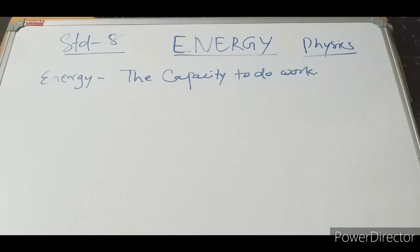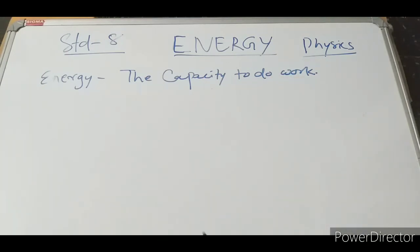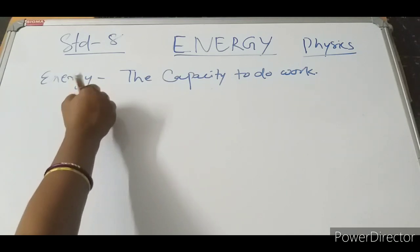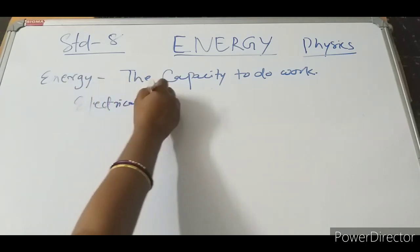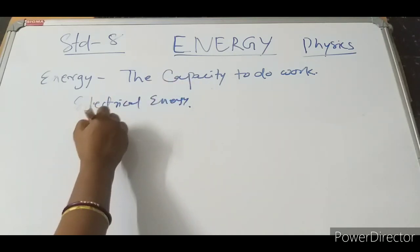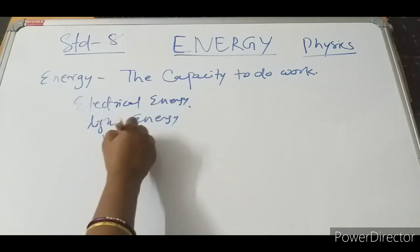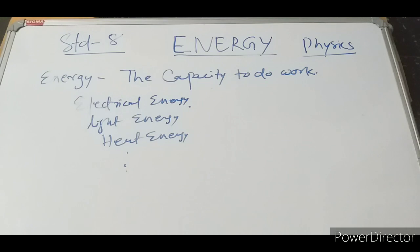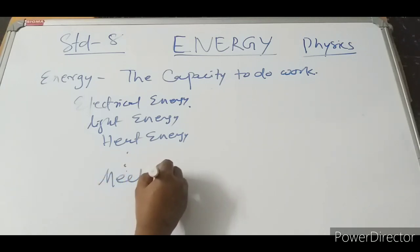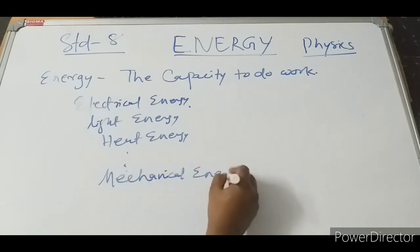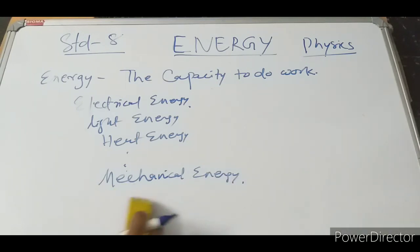Now we will discuss what is energy. Energy is the capacity to do work — the capacity of a body to do work is known as energy. There are different types of energy: electrical energy, light energy, heat energy. But in our course, we will discuss mechanical energy.